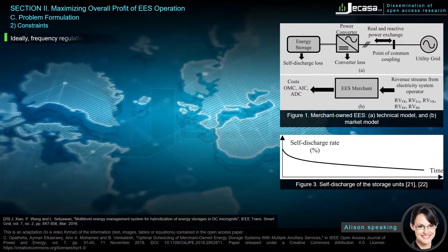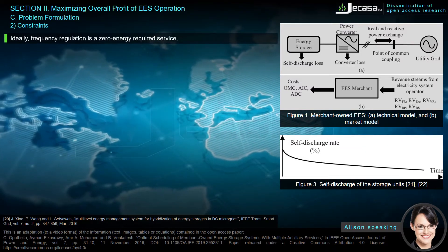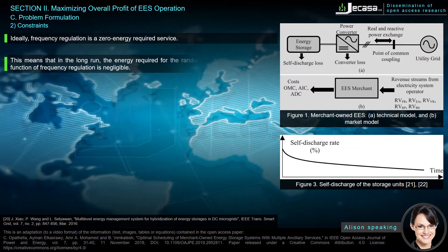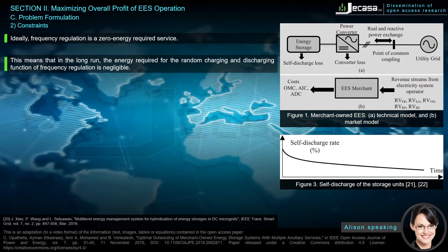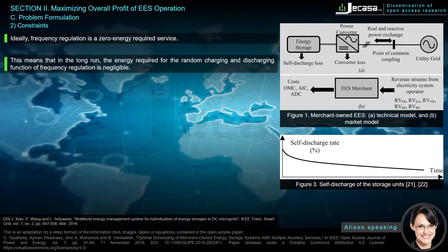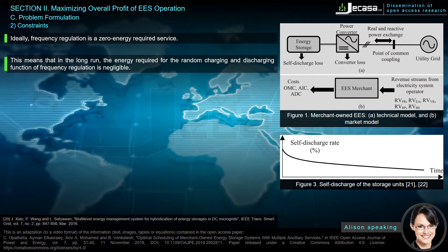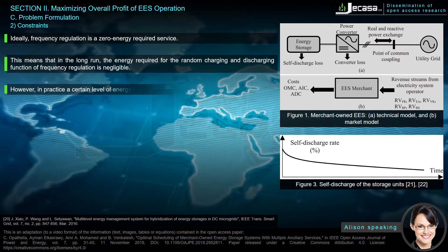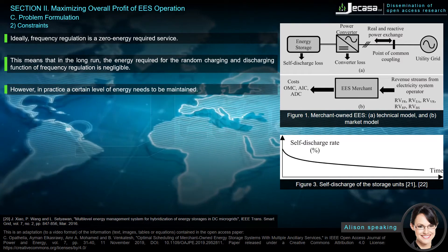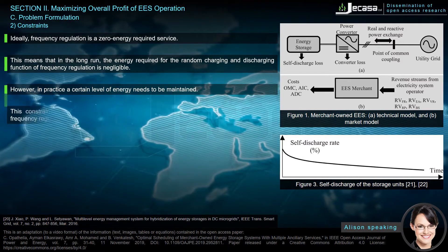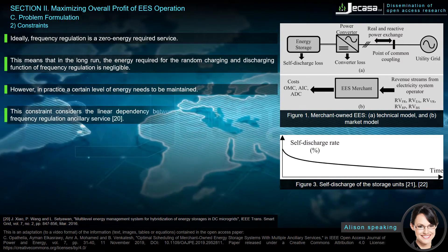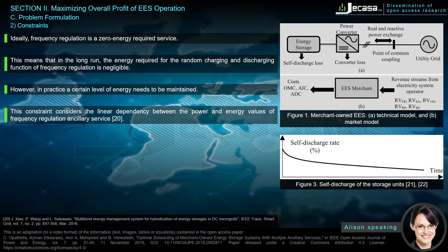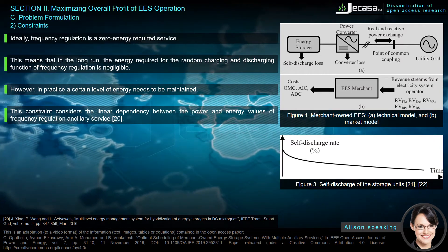Ideally, frequency regulation is a zero-energy-required service. This means that in the long run, the energy required for the random charging and discharging function of frequency regulation is negligible. However, in practice a certain level of energy needs to be maintained. This constraint considers the linear dependency between the power and energy values of the frequency regulation ancillary service.